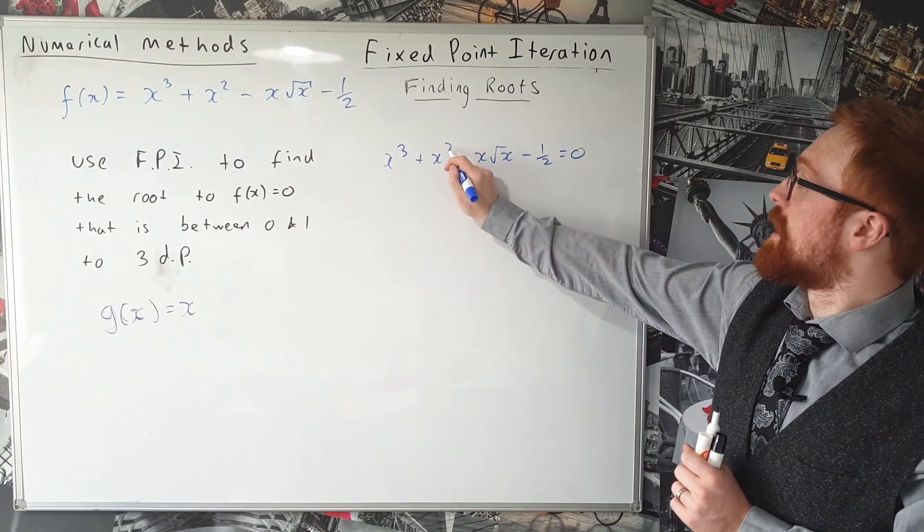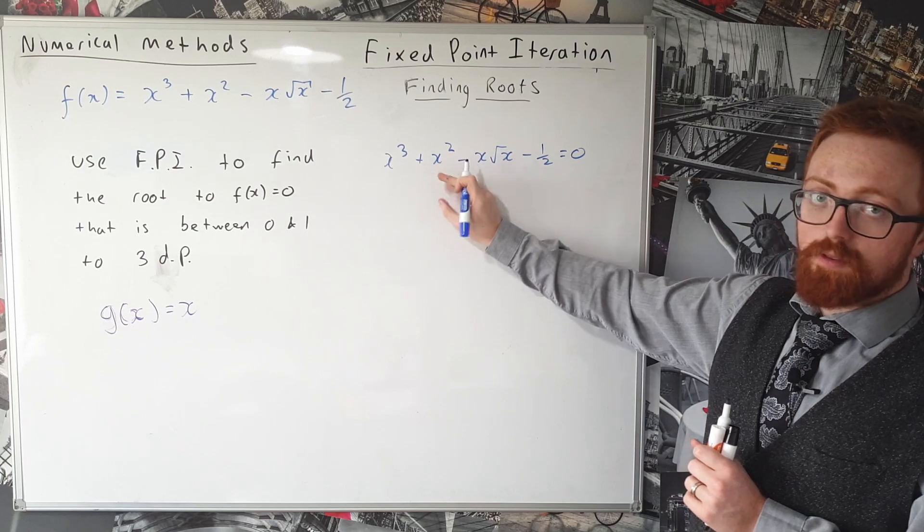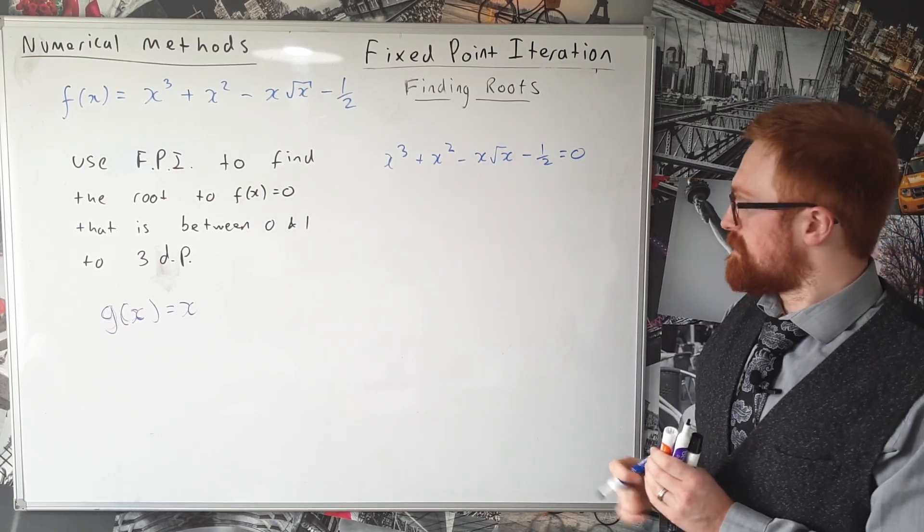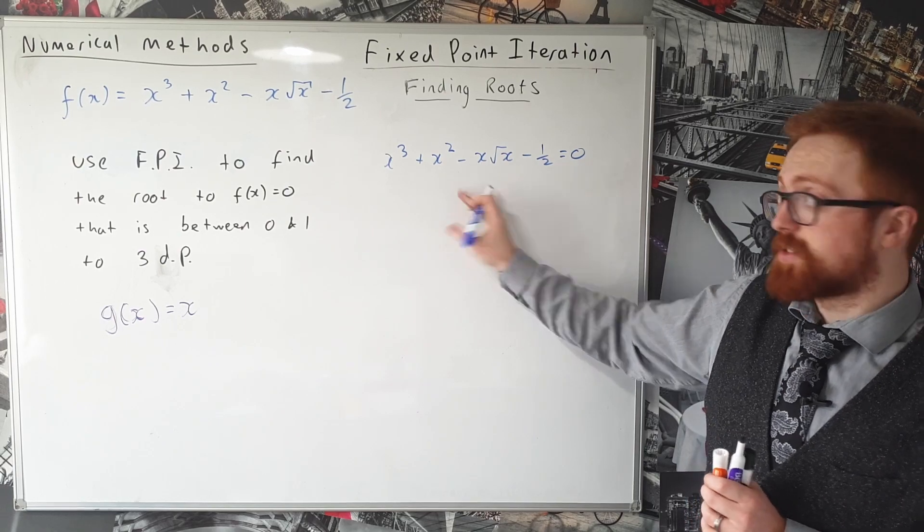In this case I know because I wrote the question that we're going to make this x² the subject first and then we'll square root. As I say there are lots of different ways you could rearrange this to get an x on its own.